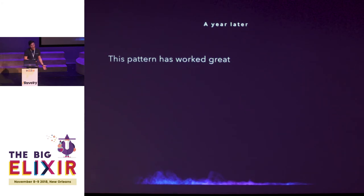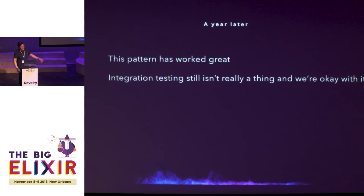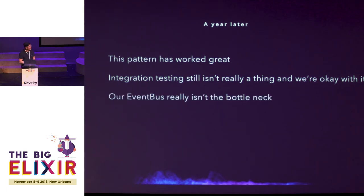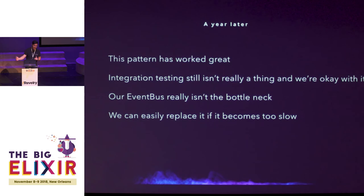Recently we implemented webhooks — Steve did it in about two weeks because we had all these events already passing through. He just spawned a consumer for the webhook and was able to listen in on the events. We unit test our functions really well: all service functions are tested to guarantee the event is sent off, and all consumers have tests to ensure every message can be consumed. The event bus isn't a bottleneck, and if it becomes one, we can easily replace it. If you want to swap in Kafka, you could put it in handle_demand to pull messages from Kafka instead.